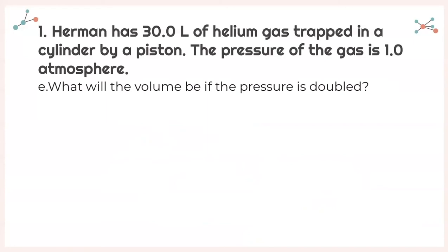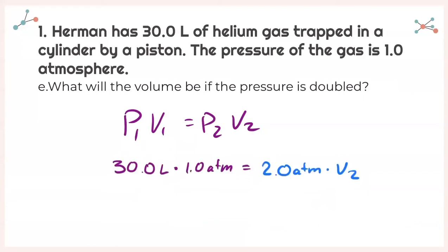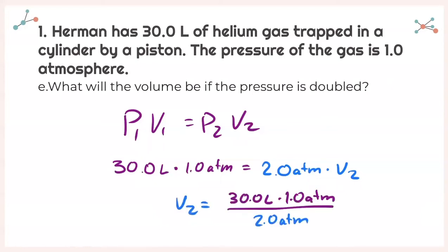For part E, it asks: what will the volume be if the pressure is doubled? Now we're not solving for pressure, we're solving for volume. Same equation: P1 times V1 equals P2 times V2. Isolating V2, I get 30.0 liters times 1.0 atmospheres divided by 2.0 atmospheres. Plugging that into my calculator, I get 15.0 liters.